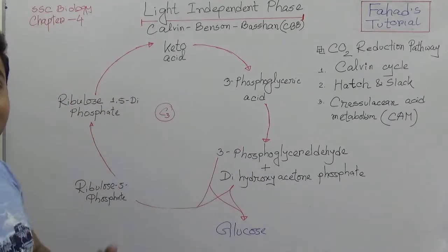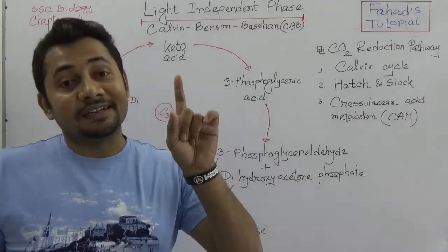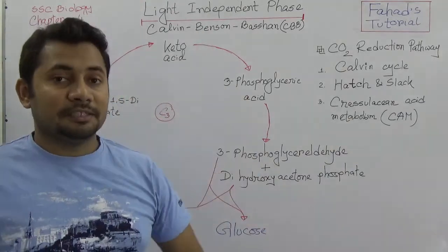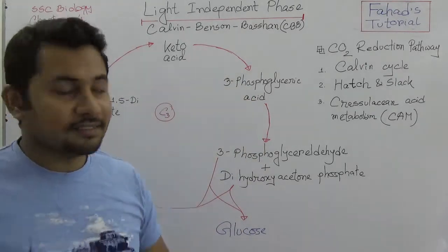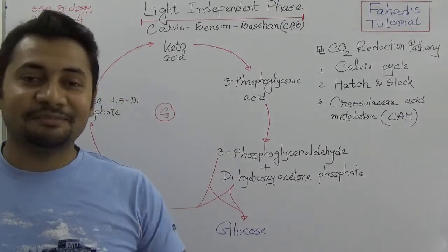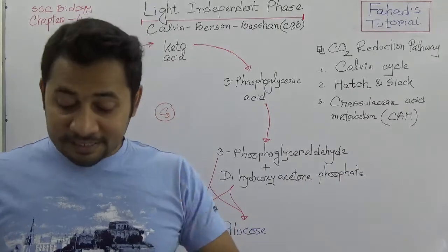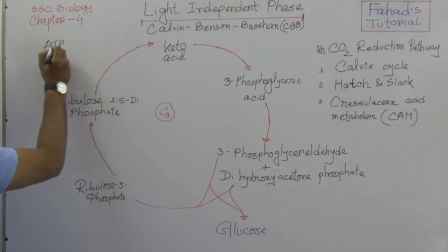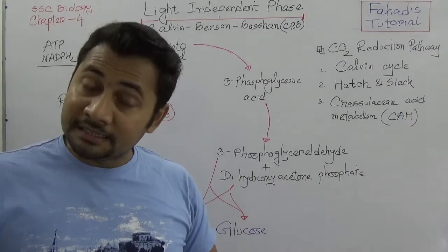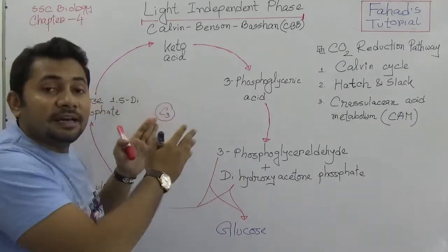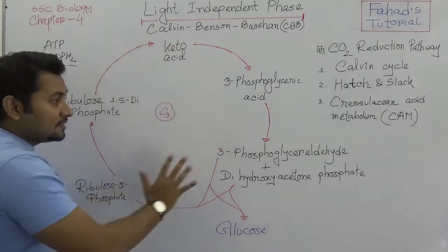I am making this very simplified because when you go to HSC level biology or A-level biology, this will be discussed again in broader aspect with many more steps in between. For your understanding, only 6 to 7 compounds are written. ATP and NADPH2 were produced in the light dependent phase and will be used here — that is why ATP and NADPH2 is called assimilatory power.